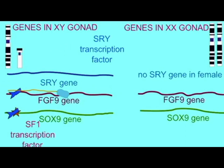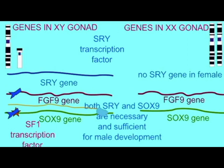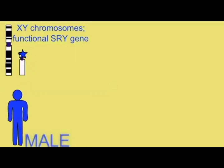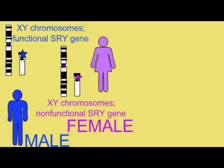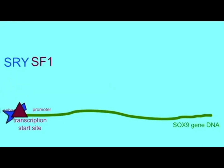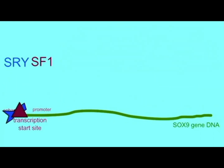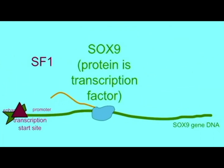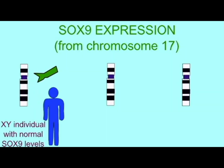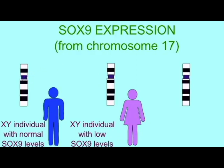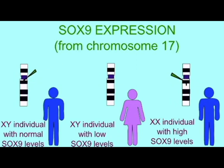In typical male development, the SRY gene on the Y chromosome, which is a transcription factor, turns on the expression of other genes, such as SOX9. And then these other genes, such as SOX9 and others, turn on additional downstream genes, which then start typical male development. If these genes are missing or mutated or do not work as effectively, this can cause ambiguous genitalia or female genitalia in males.